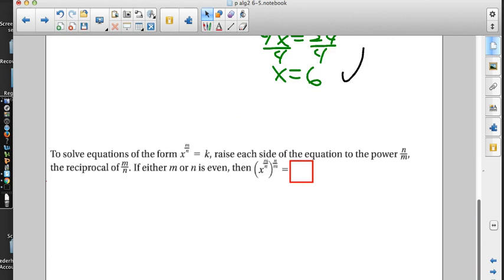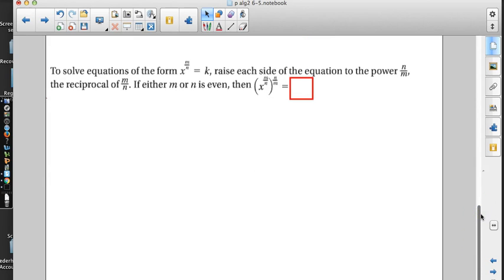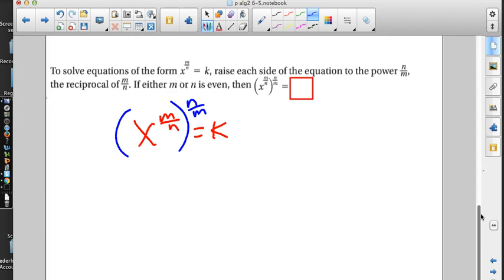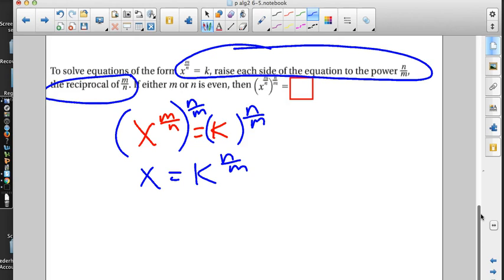Now, you got that highlighter, you're going to need it again. To solve equations of the form x to the m over n equals k, raise each side of the equation to the power n over m. That's the reciprocal of m over n. I think that makes sense. m n over n m. Oh, wait a minute. Even though they're in a different order, they're the same thing. That would just be x. We need to highlight that. Raise each side of the equation to the reciprocal power.